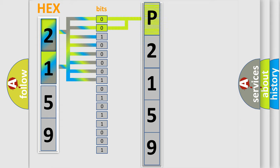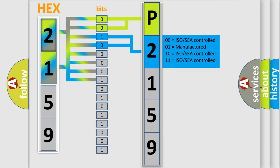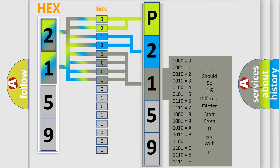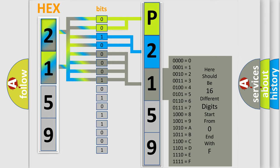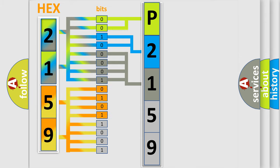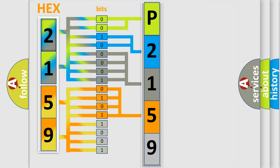By combining the first two bits, the basic character of the error code is expressed. The next two bits determine the second character. The last bits of the first byte define the third character of the code. The second byte is composed of a combination of eight bits: the first four bits determine the fourth character, and the last four bits define the fifth character. A single byte conceals 256 possible combinations.